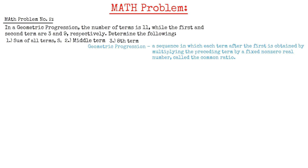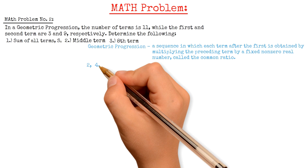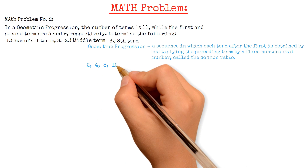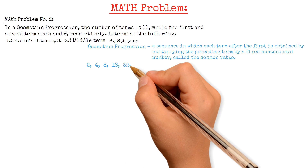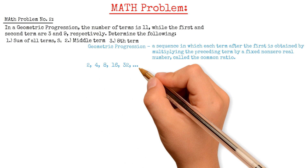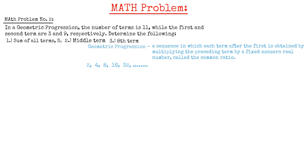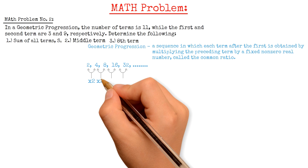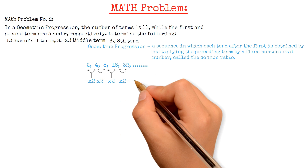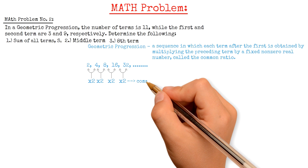A sample of a geometric progression is 2, 4, 8, 16, 32, and so on. Notice that the ratio of each consecutive term is 2, which is constant.